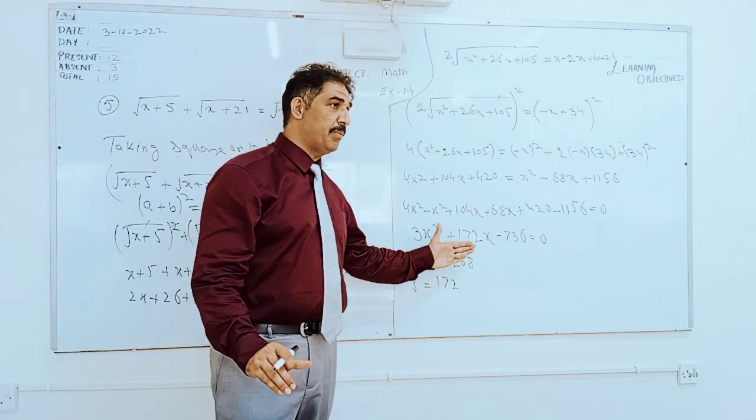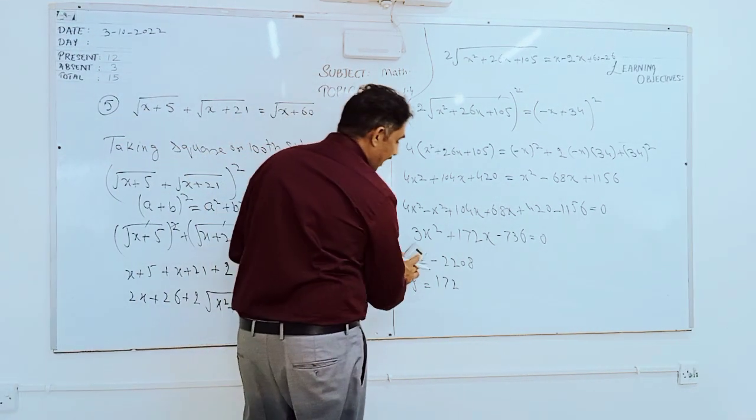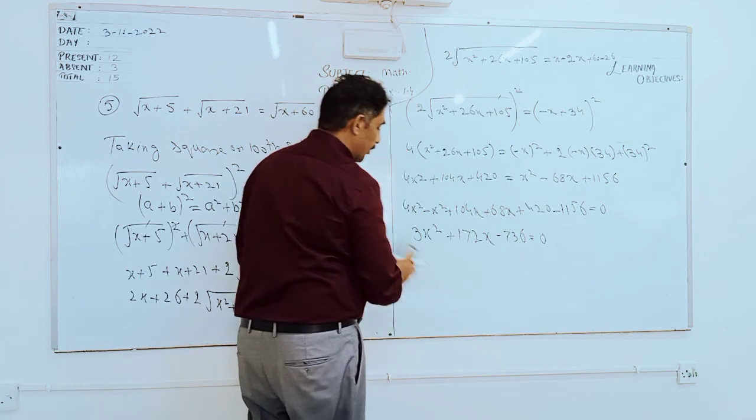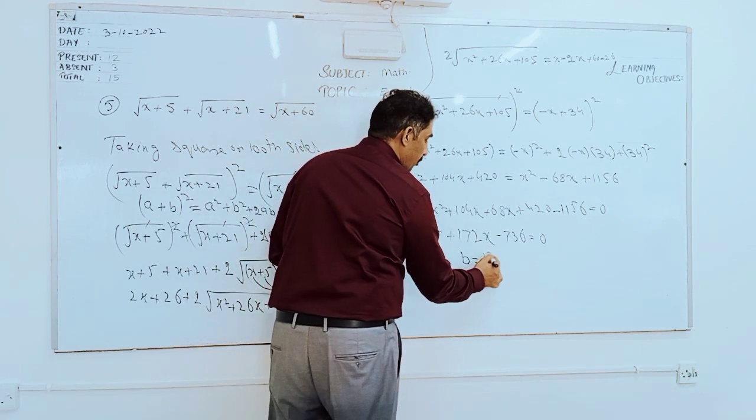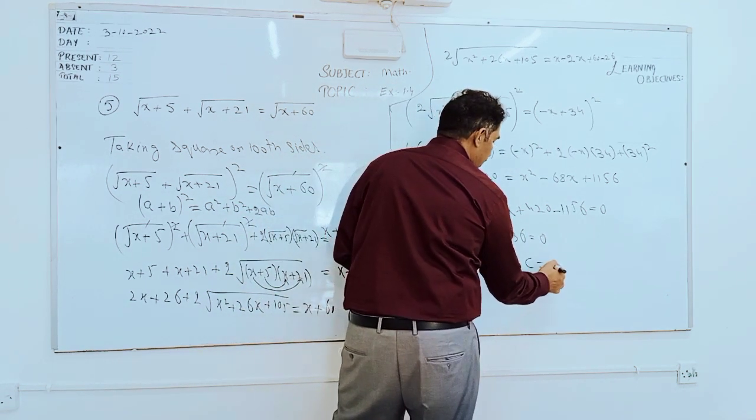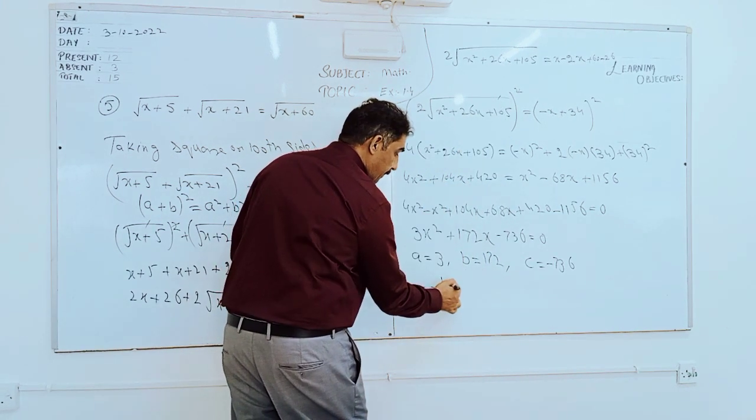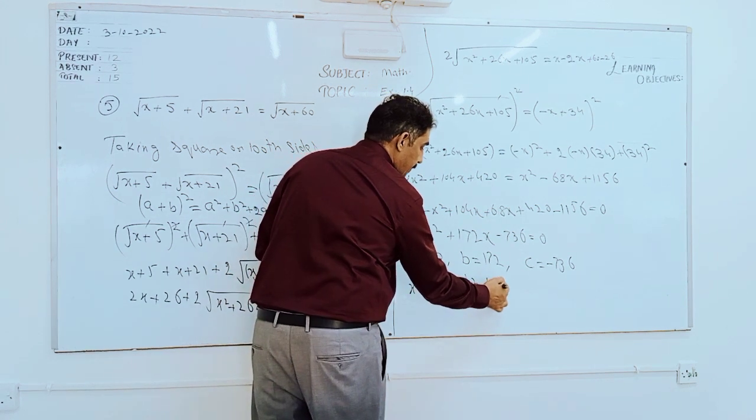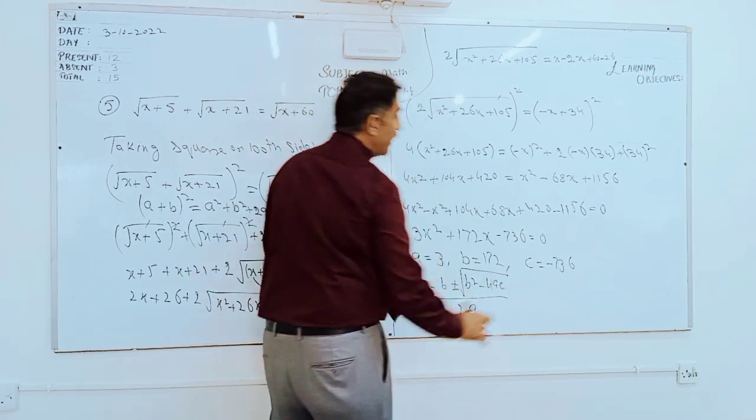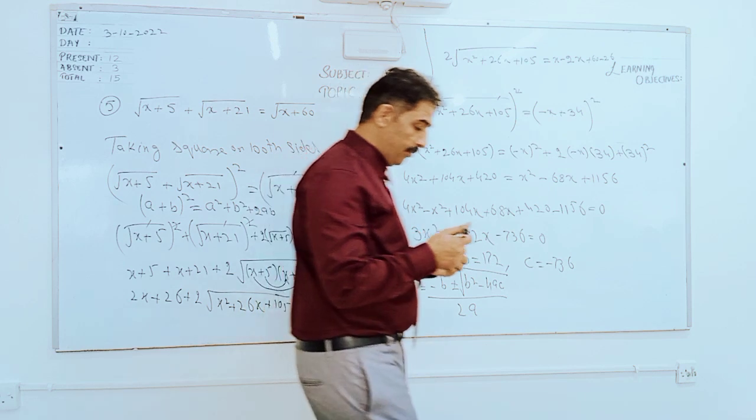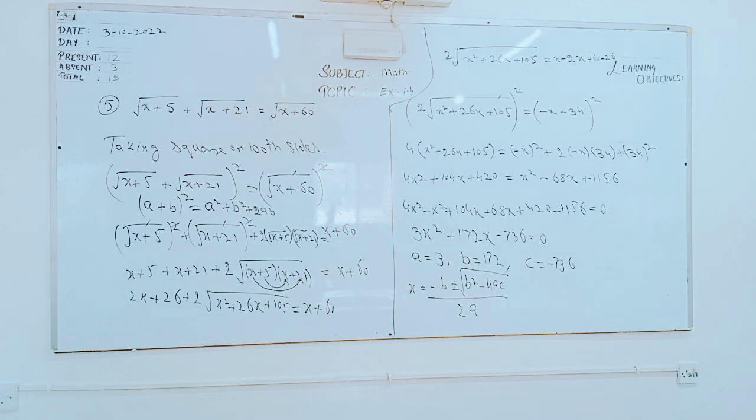No. Quadratic formula. It means you have to use the quadratic formula. Because I have checked and checked, proper factors are not coming. So you have to use the quadratic formula. You have already well known about the quadratic formula. According to quadratic formula, the value of a is equal to 3, the value of b is equal to 172, and the value of c is equal to 736. And what is the quadratic formula? x = (-b ± √(b²-4ac))/2a. Here we write and apply the quadratic formula and answer the question.